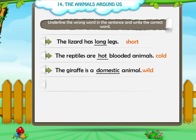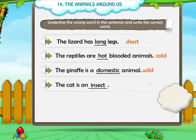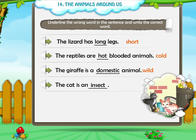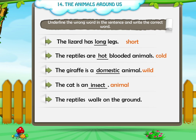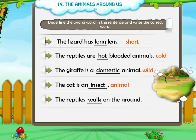Fourth, the cat is an insect. The correct answer is: The cat is an animal. Fifth, the reptiles walk on the ground. The correct answer is: The reptiles crawl on the ground.